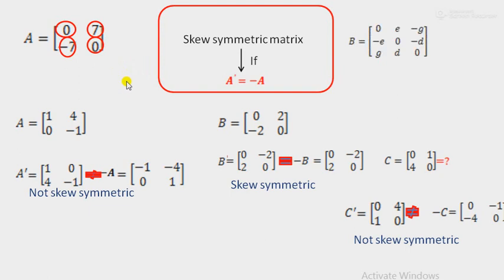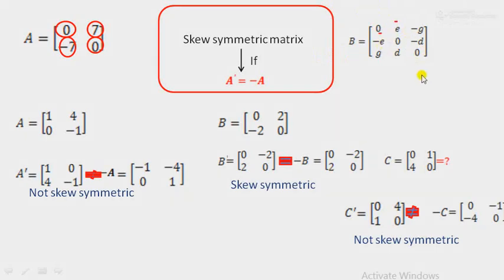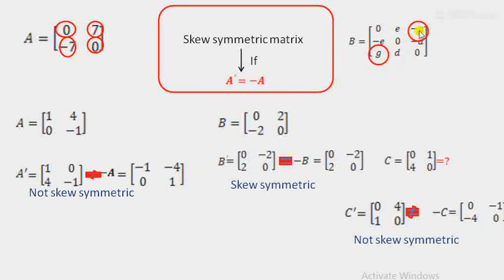Consider another example, matrix B. In a skew symmetric matrix, the diagonal elements are always 0, and the opposite numbers are equal in quantity but opposite in sign. Here E and minus E have the same quantity but opposite signs. Similarly, minus G and D, and minus D and D — these pairs are equal in quantity but opposite in sign. Therefore, matrix B is directly a skew symmetric matrix.